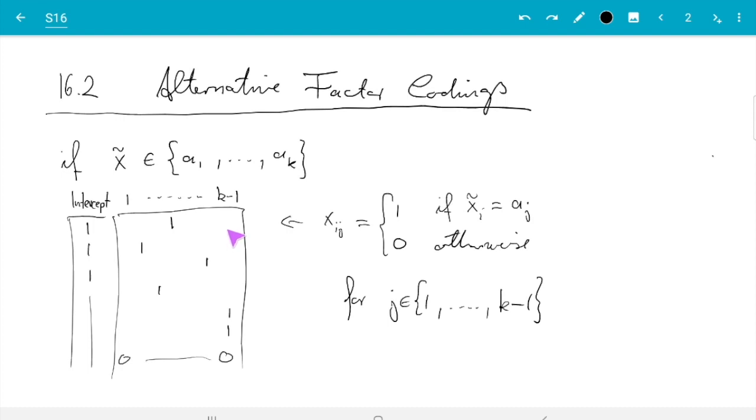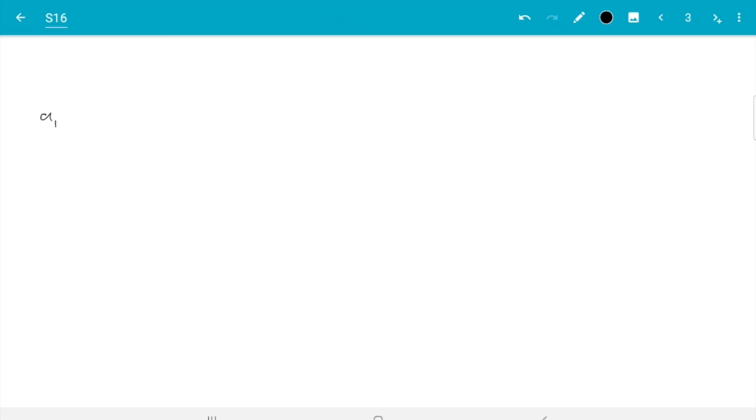And if you think that through, what we really need to have is with this extra column of 1s, we need to be able to span a k-dimensional space. So let me try to write that a bit. a_1 maps to, if I write the intercept, let's write the intercept 1. And then we have 1, 0, up to 0.